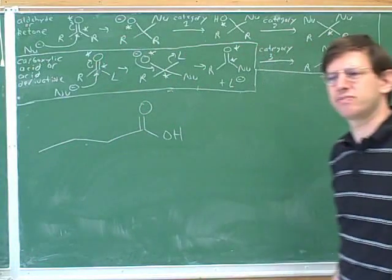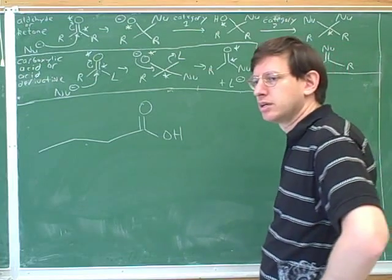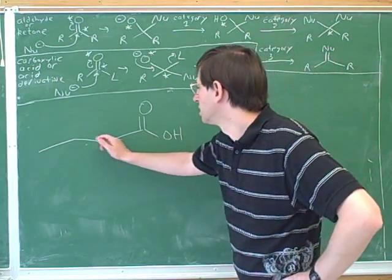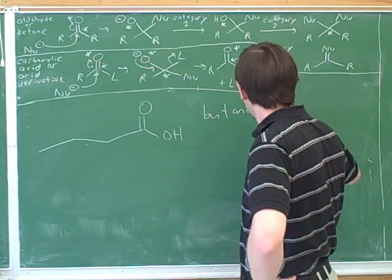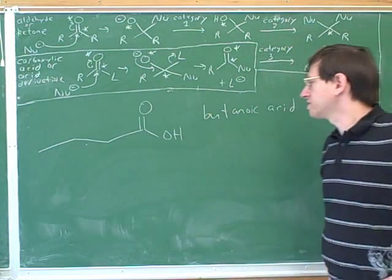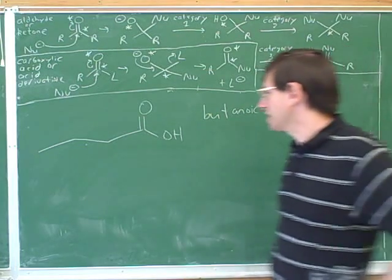Okay, well, what would be the name for this? You can just say out loud what the name would be here. One, two, three, four - butanoic acid. Right. So what's the suffix for carboxylic acids? O-aic acid. So this would be butanoic acid. Good.